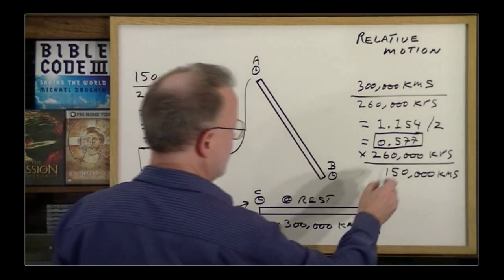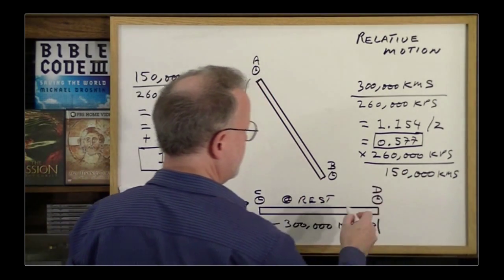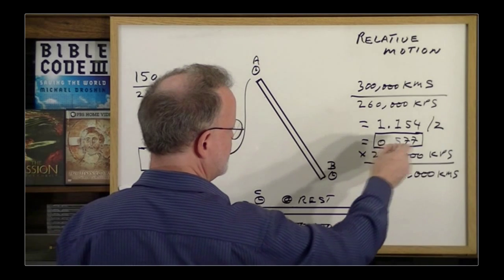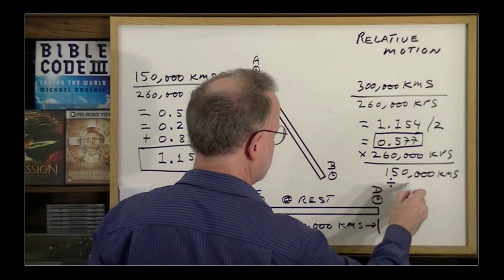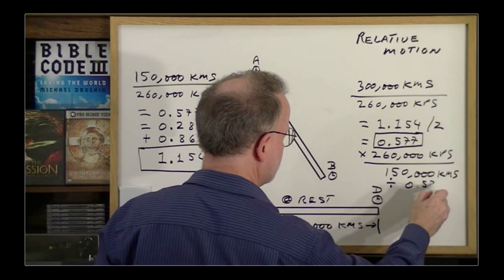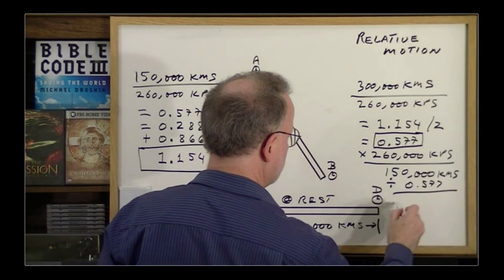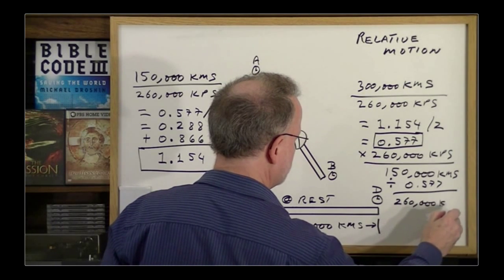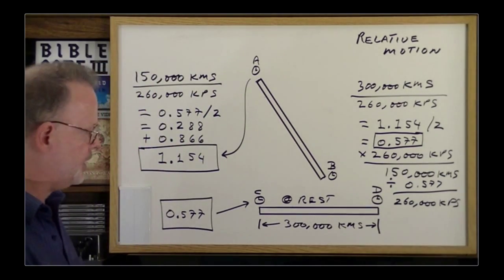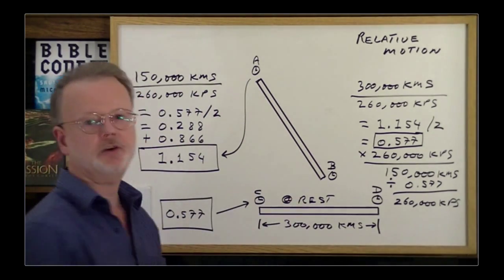Now, based upon that, they realized they crossed a distance of 150,000 kilometers in this much of a time period. Therefore, you can simply take that, 150,000 kilometers, divide it by 0.577, and they end up with a result of 260,000 kilometers per second. So, he can calculate what his velocity is relative to this guy here.